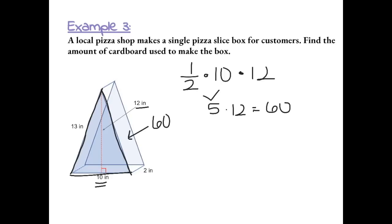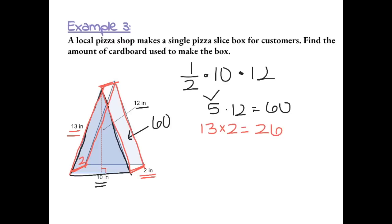Next, we find the surface area of the side rectangle. The dimensions of this rectangle are 13 by 2 inches, so 13 times 2 gives us 26. The right side of the box also has the same dimensions, 13 by 2, so that side is also 26. The last piece of the box is the bottom, which has dimensions 10 by 2, giving us 20.